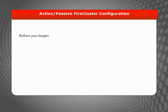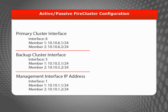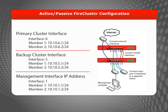Before enabling FireCluster, make sure that you have the hardware required, you've planned the IP addresses and interfaces to use, and you have disabled any unused interfaces in the configuration file. For this demonstration, I'll use specific interfaces and IP addresses connected accordingly. If you configure an active-passive cluster, make sure that your network interfaces are configured in mixed routing or drop-in mode. To configure an active-active cluster, your network interfaces must be configured in mixed routing mode. FireCluster does not support bridge network mode.